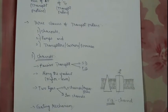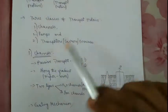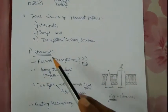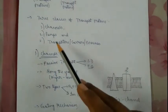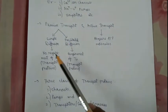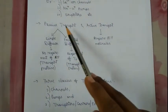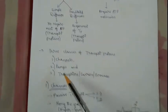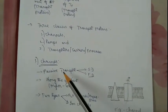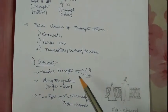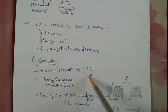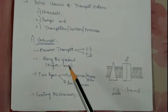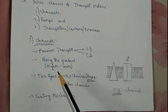There are majorly three classes of transport proteins: channels, pumps, and transporters. Channels are instruments of passive transport — they require no ATP molecules. Like facilitated diffusion, channels require transport proteins and transport ions or molecules along the gradient, meaning from higher to lower concentration areas.